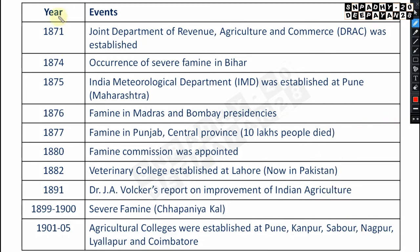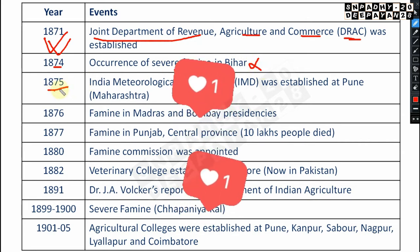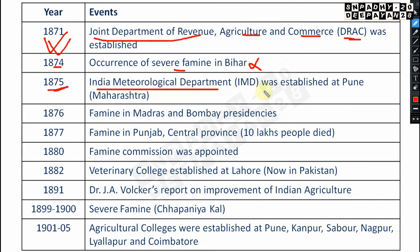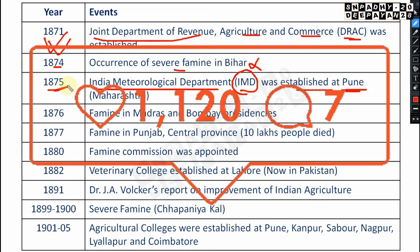In 1871, the Joint Department of Revenue, Agriculture and Commerce — known as DRSC — was established. In 1874, there was a severe famine in Bihar, which is not that important. In 1875, the India Meteorological Department (IMD) was established, which is very very important. Its headquarter is at Pune. Please remember: IMD established at Pune in 1875.